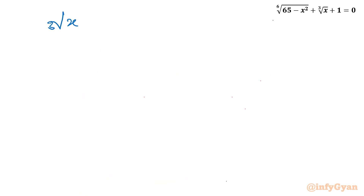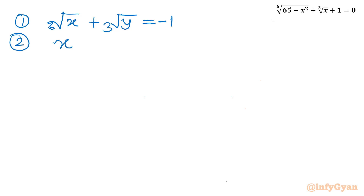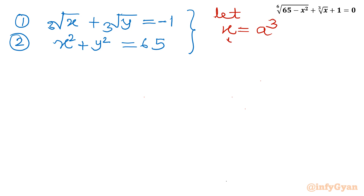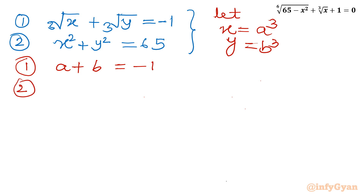Let us solve this new system. Equation 1: cube root x plus cube root y equals negative 1. Equation 2: x squared plus y squared equals 65. Now I will use substitution: let x equal to a cubed and y equal to b cubed. So I can frame these equations in a and b. Equation 1 becomes: a plus b equals negative 1. Equation 2 becomes: a to the power 6 plus b to the power 6 equals 65.